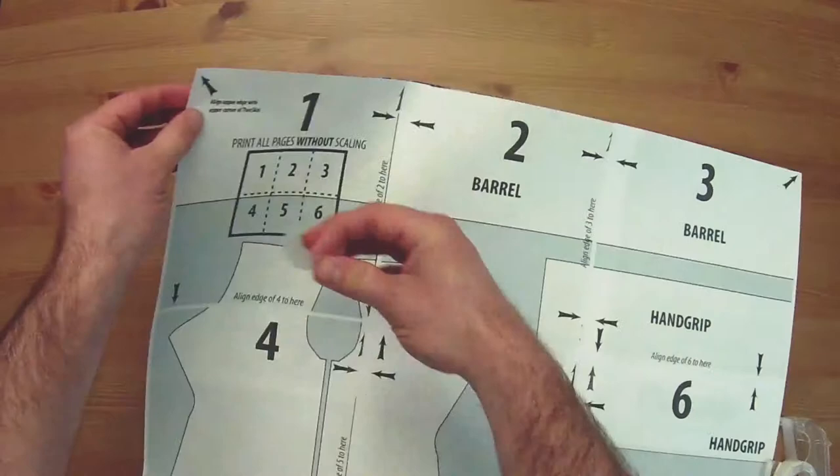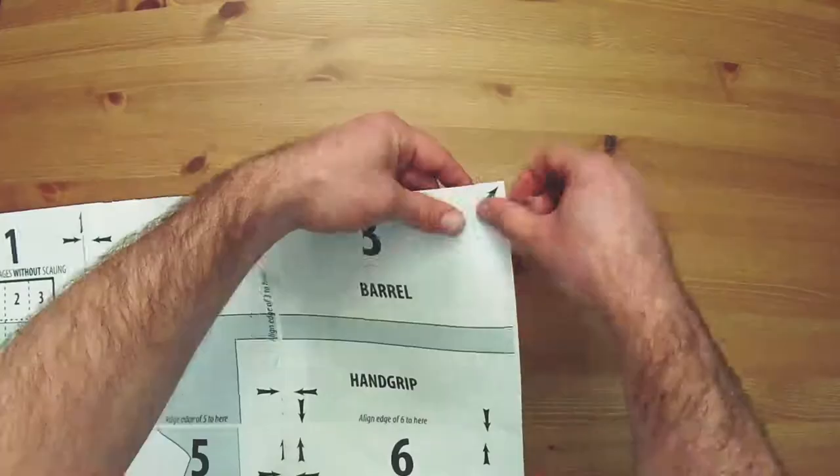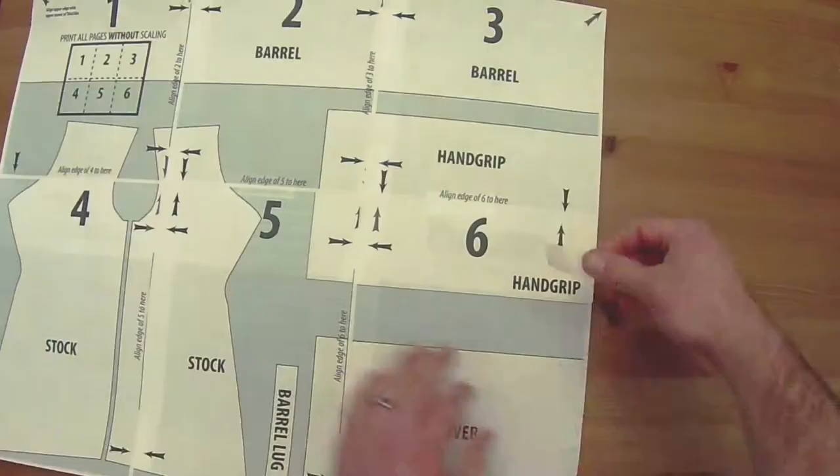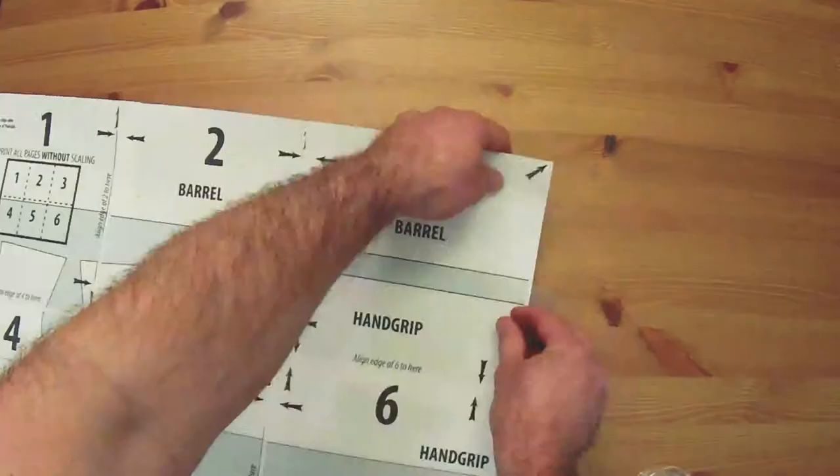Once assembled, align and attach the template to the thin skin at the top corners. Next, flip the template and thin skin over and flatten completely. Attach at both bottom corners. It is also helpful to attach it to gray areas which will later become scrapped.